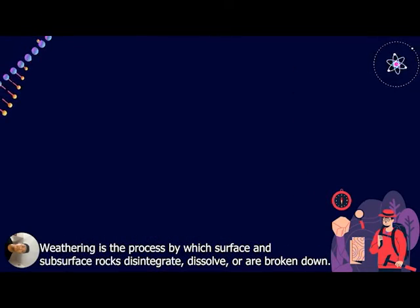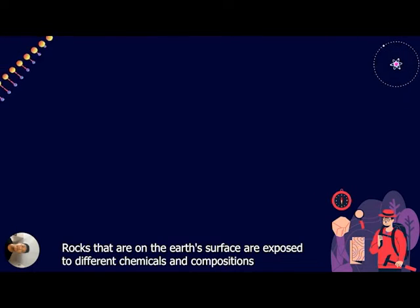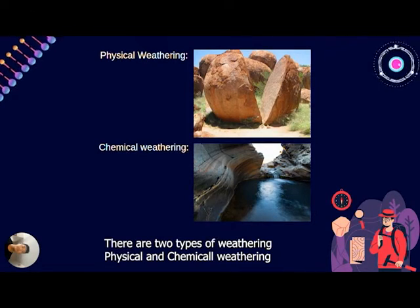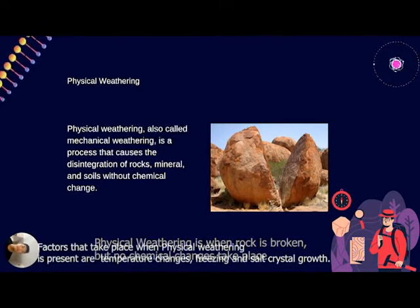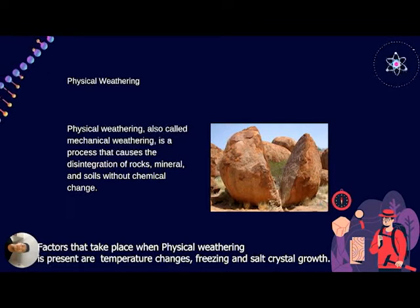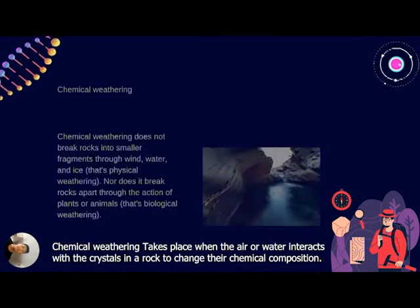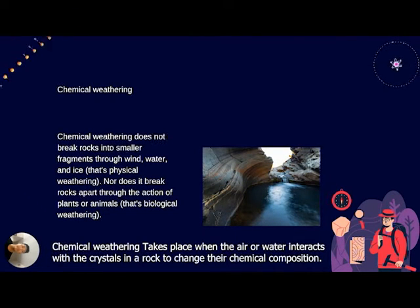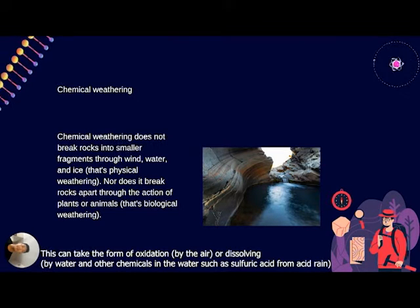Weathering is the process by which surface rock disintegrates and is broken down. Rocks on the Earth's surface are exposed to different chemicals and compositions. There are two types of weathering — physical and chemical. Physical weathering is when rock is broken with temporary changes, freezing, and salt crystal growth. Chemical weathering takes place when air or water interacts with crystals in a rock to change their chemical composition. This can occur by oxidation by air, or dissolving by water and other chemicals such as sulfuric acid.